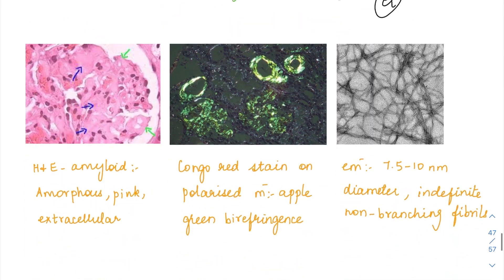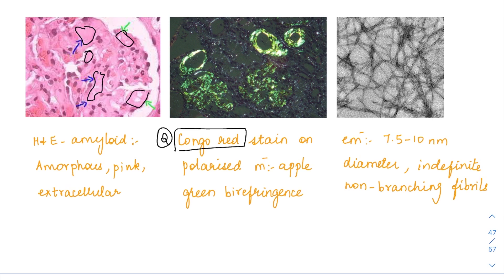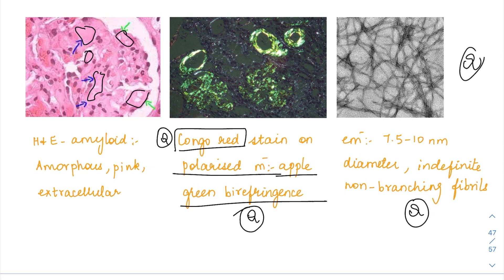Under polarized microscopy after Congo red staining, amyloid gives an apple green birefringence, which is because of the beta pleated sheet configuration. In H&E stain, you just see a pinkish extracellular amorphous material. The special stain for proving it is amyloid is Congo red stain. Under Congo red on light microscopy it appears pink, but under polarized light it gives apple green birefringence. On electron microscopy they are non-branching fibrils of 7.5 to 10 nanometers. These image-based questions can be asked as MCQs.